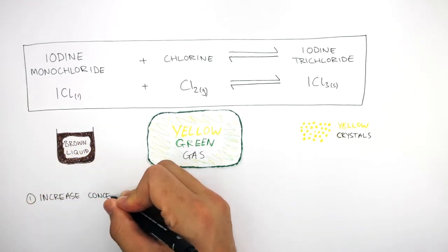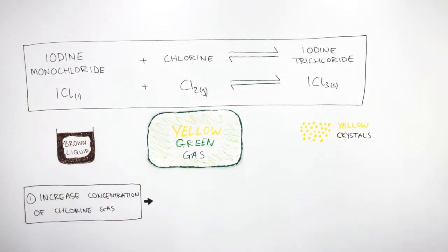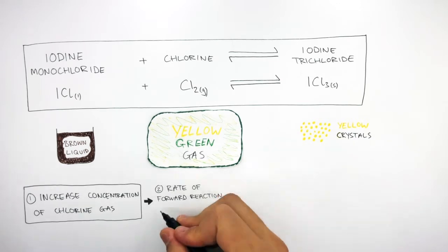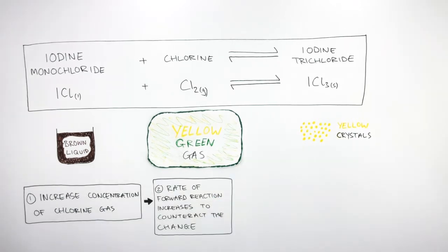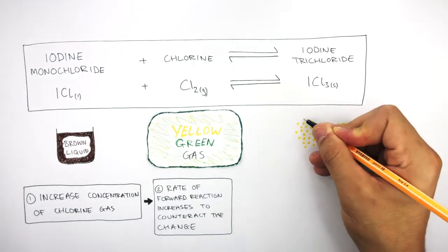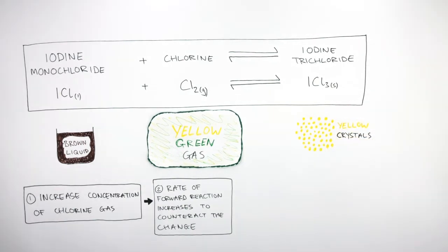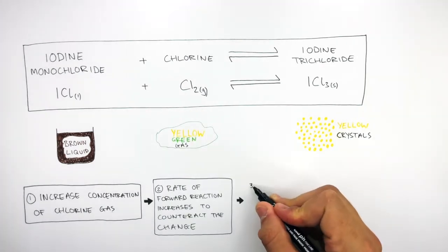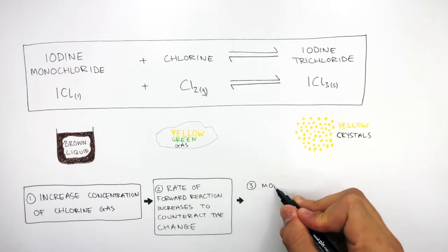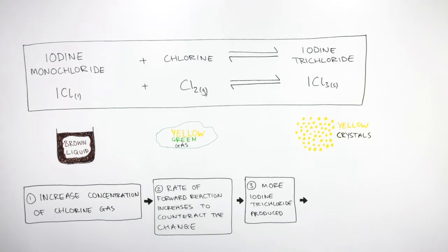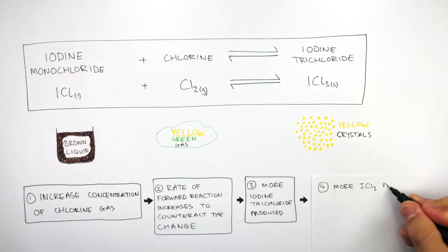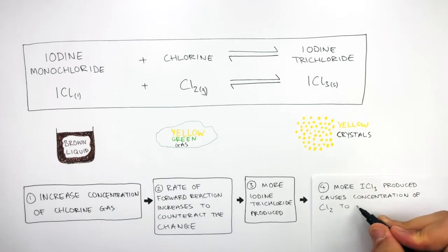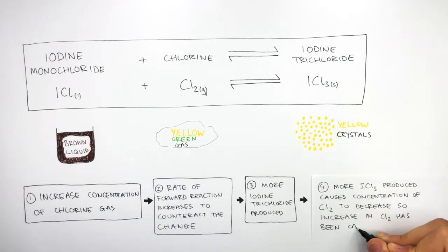When we increase the concentration of the chlorine gas, the rate of the forward reaction increases to counteract the change. This causes more iodine trichloride yellow crystals to be formed. As the chlorine reacts, the concentration of chlorine decreases, and more iodine trichloride is produced — so the increase in chlorine has been cancelled out.